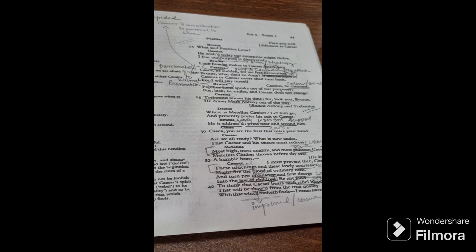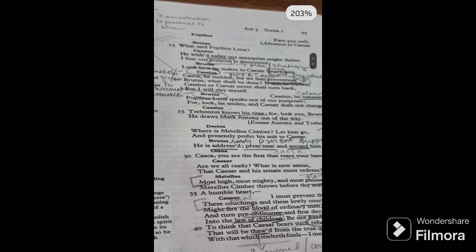So yeah, Popilius, fare you well, but he doesn't say anything. He goes to Caesar. What said Popilius Lena? So Brutus is asking, what was he saying? He wishes today our enterprise might thrive. I fear our purpose is discovered. I fear our strategy. I fear our plans is discovered. Look how he makes to Caesar. Mark him. Look how, pay attention how he is going to Caesar, makes his way. How he is going towards Caesar. Mark him. Pay attention to him.